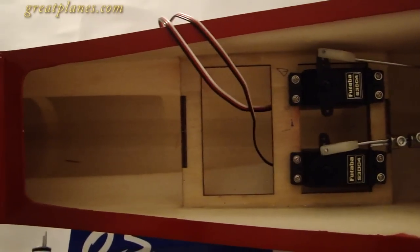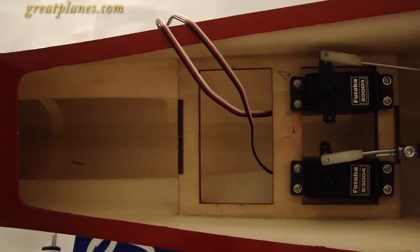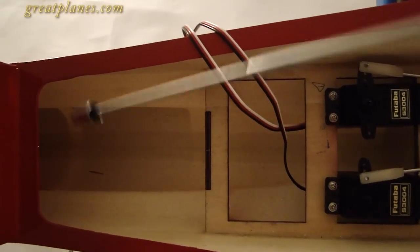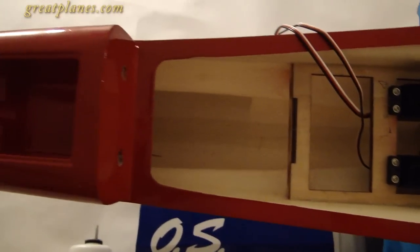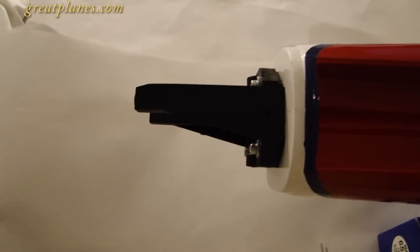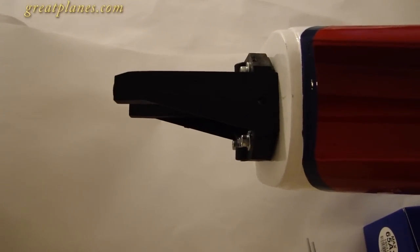On to the next section of the build, which is installing our fuel tank, engine mount, and engine. This is where your fuel tank is going to be located, right here. You're going to install the fuel tank all the way forward and then take a piece of balsa and glue it to your fuselage to help hold that fuel tank in place.